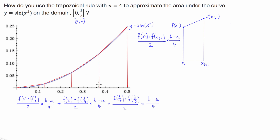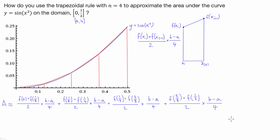And finally the last trapezoid: f(3/8) plus f(1/2), divided by 2, times b minus a over 4. So that's our area approximation. It's quite convoluted, but what we can do is simplify this to get a clean-looking formula which we can then use to calculate our area approximation.